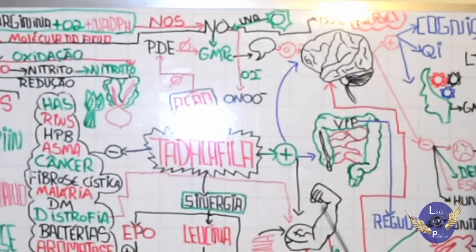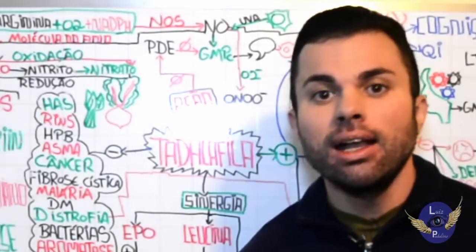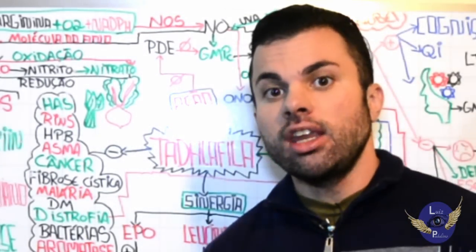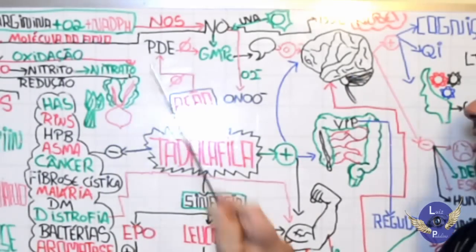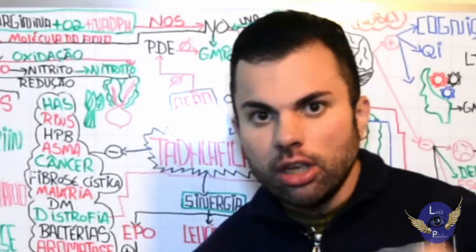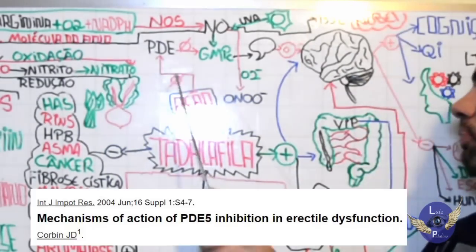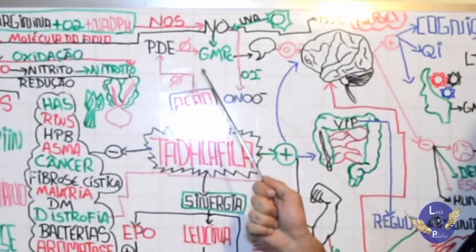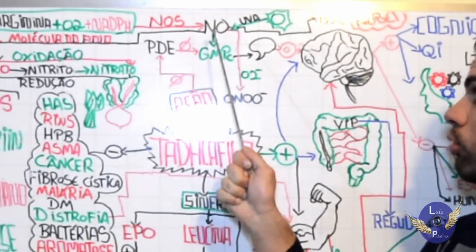But then, your friend's competitor hires a henchman to destroy the second messenger. This henchman's name is phosphodiesterase. Imagine how impressive it would be if you prevented this henchman's action. That's exactly what Tadalafil does. It inhibits phosphodiesterase. Consequently, you'll have more action from the second messenger and more nitric oxide action.